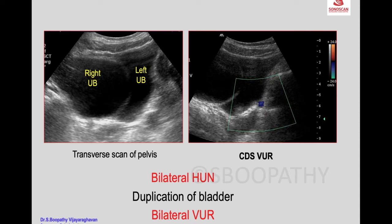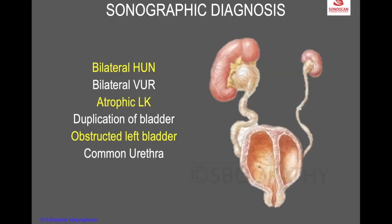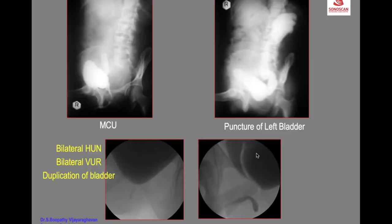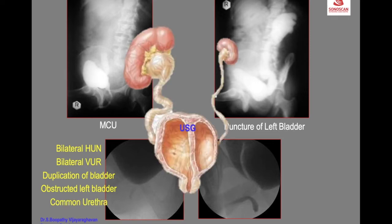When you apply colour Doppler, there is vesicoureteric reflux on both sides — bilateral VUR, ureteral nephrosis, atrophic left kidney, duplication of the bladder with obstructed left bladder, and a common urethra. This is the complete ultrasound diagnosis, confirmed with a single imaging modality. Ultrasound showed all the findings as a single imaging modality.